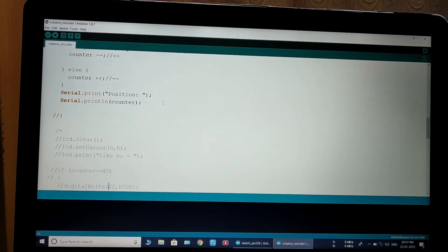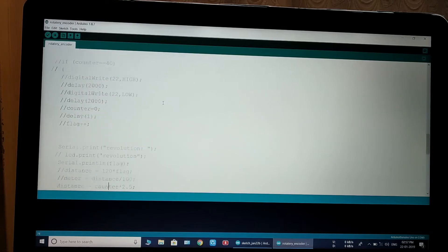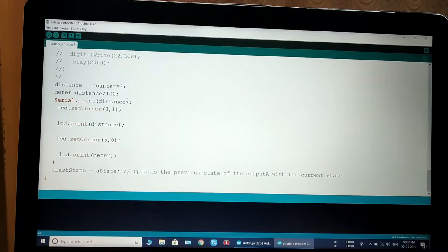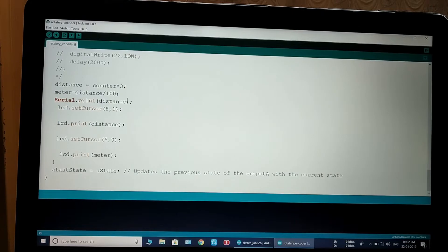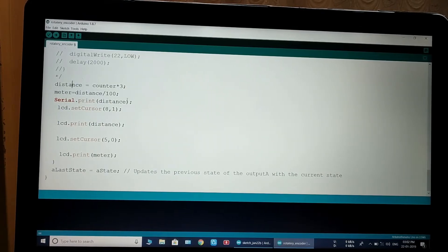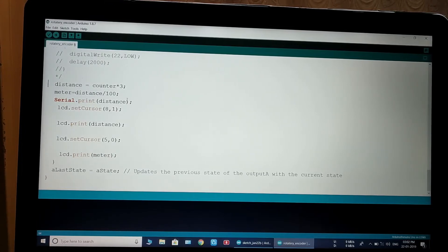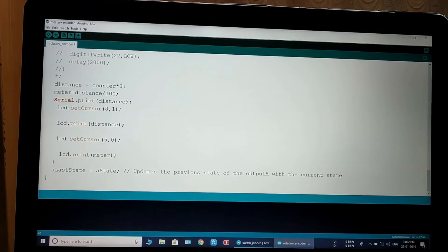Distance equals counter into 3. 3 is in centimeter, then it converts to the meter. It is divided by 100, then it is converted into meter.